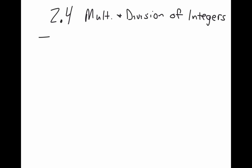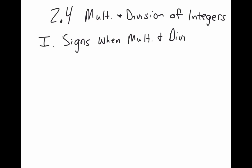Starting with Roman numeral 1. Before we deal with numbers at all, I'm just going to look at the signs — the positives, negatives, and stuff like that. So: signs when multiplying and dividing. It doesn't matter if you're multiplying or dividing; you're going to get the same thing happening with the signs.